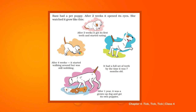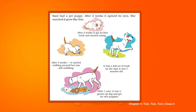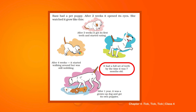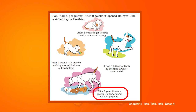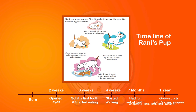Rani had a pet puppy. After two weeks it opened its eyes. After three weeks it got its first tooth and started eating. After four weeks it started walking around but was still wobbling. It had a full set of teeth by the time it was seven months old. After one year it was a grown-up dog and got its own puppies.